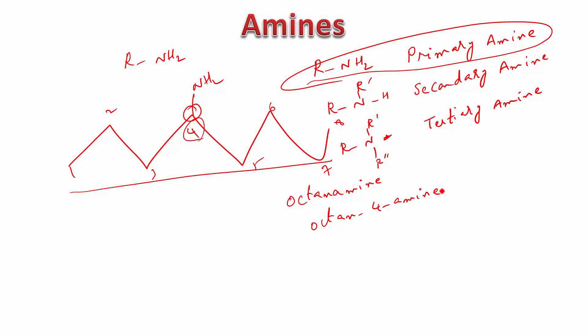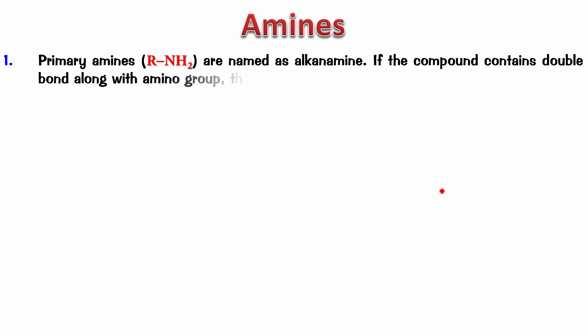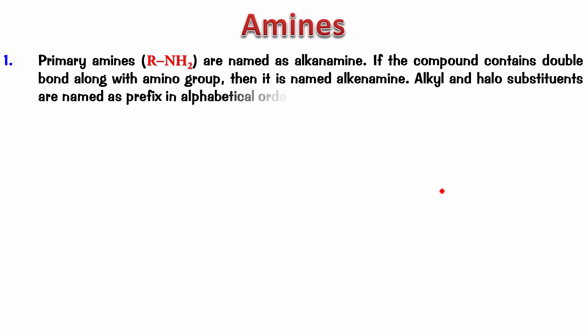That's the way you name primary amines. So the rules: primary amines with NH2 are named as alkan-amine. If the compound contains double or triple bonds, the amino group is then named as alken-amine or alkyn-amine. Alkyl and halo substituents are named as prefixes in alphabetical order, just like we do for alkanes.